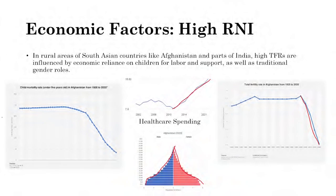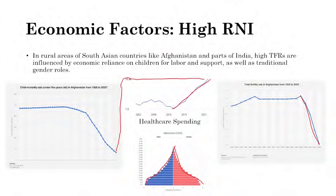Afghanistan's declining child mortality rate correlates with increased healthcare spending. As healthcare went up, child mortality decreased. Birth rates decreased later, after the mortality rate fell — that gap is why the population is still growing significantly. As healthcare spending increases, more resources and availability reduce the number of infants and children dying, increasing population while birth rates remain high because children are valued as labor and family support.